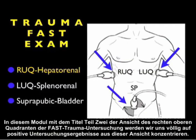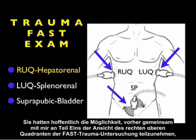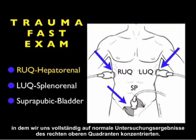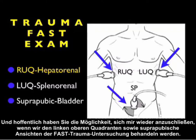In this module entitled Part 2 of the Right Upper Quadrant View of the Trauma Fast Exam, we're going to focus entirely on positive findings from this view. Hopefully you've had a chance to join me prior for Part 1, where we focused entirely on normal findings from the Right Upper Quadrant, and hopefully you'll join me back as we go through the Left Upper Quadrant and Suprapubic Views of the Trauma Fast Exam.